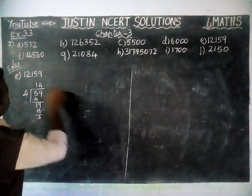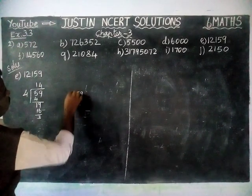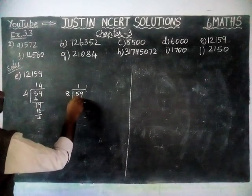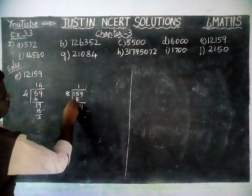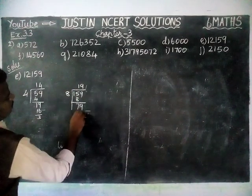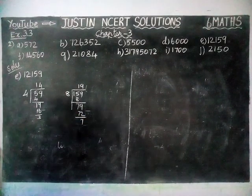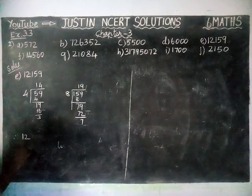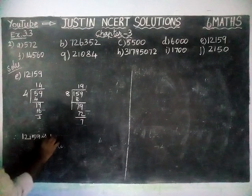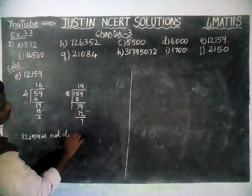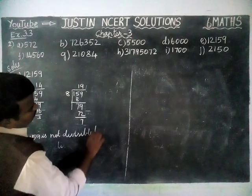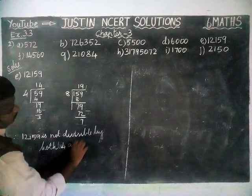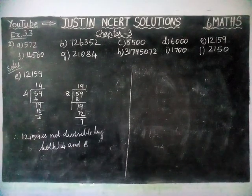Next, for divisibility by 8, the last 3 digits are 159. Dividing 159 by 8: in 15, we have only 1 eight, remaining 7, bringing down 9 gives 79. 8 nines are 72, remaining 7. Remainder 7 is coming. Therefore 12,159 is not divisible by both 4 and 8 — neither 4 nor 8 will divide the given number.